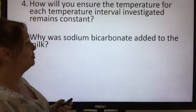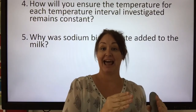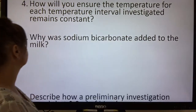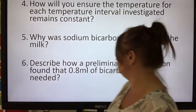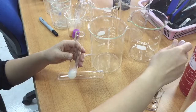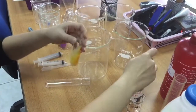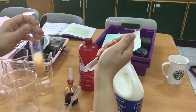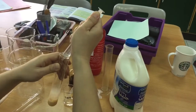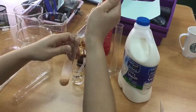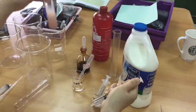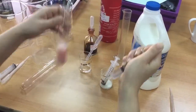Why was sodium carbonate added to the milk? Because we wanted to make it alkali, so that when it produced lactic acid and turned acidic, we could see that change. Regarding the preliminary investigation that found 0.8ml of bicarbonate was needed: we put the Cresol Red in with the milk, it turned yellow, then drop by drop we added sodium bicarbonate until it turned red. That was the minimum amount needed so that as soon as lactic acid was produced, it would turn yellow.